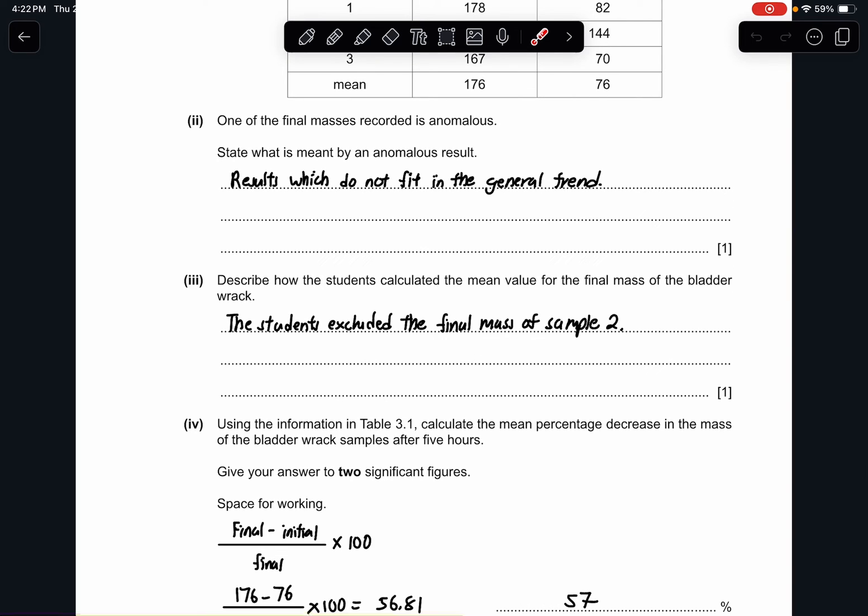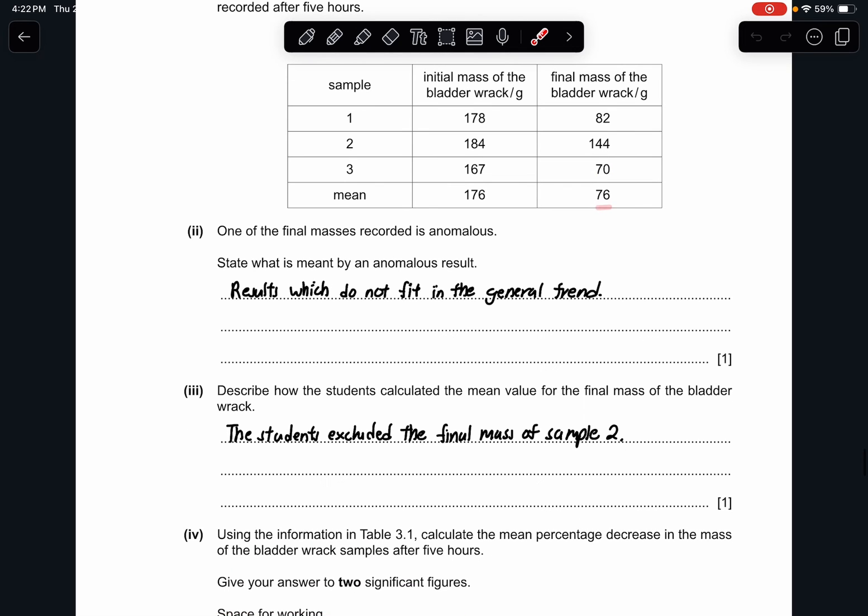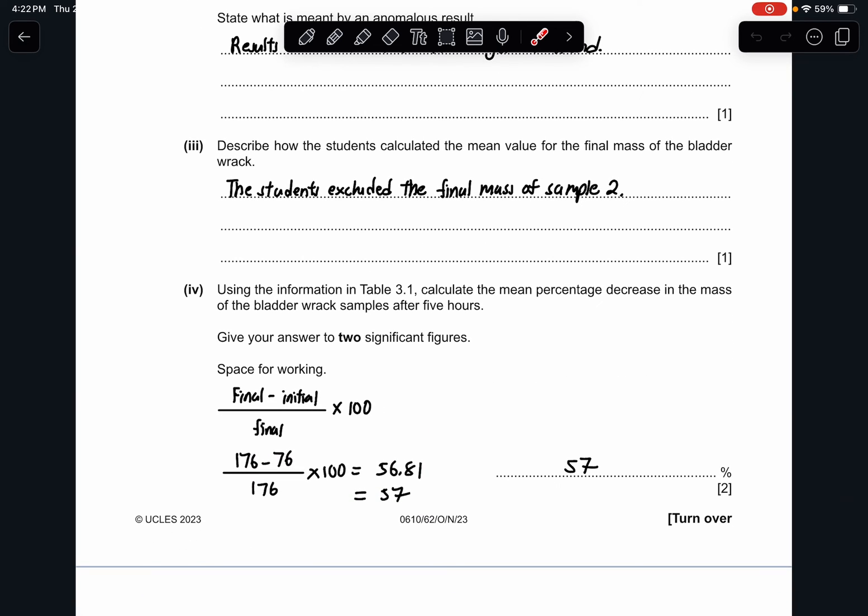Part three describes how the students calculate the mean value for the final mass of the bladder wrack. If you just use 82 plus 70 and divide by 2, you actually get 76. So what they do is that they excluded the final mass of sample number 2. Part 4, using the information in table 3.1, calculate the mean percentage decrease in the mass of the bladder wrack sample after five hours. Give your answer to two significant figures. The formula for percentage decrease is final minus initial over initial times by 100. And you will get your answer as 57%.